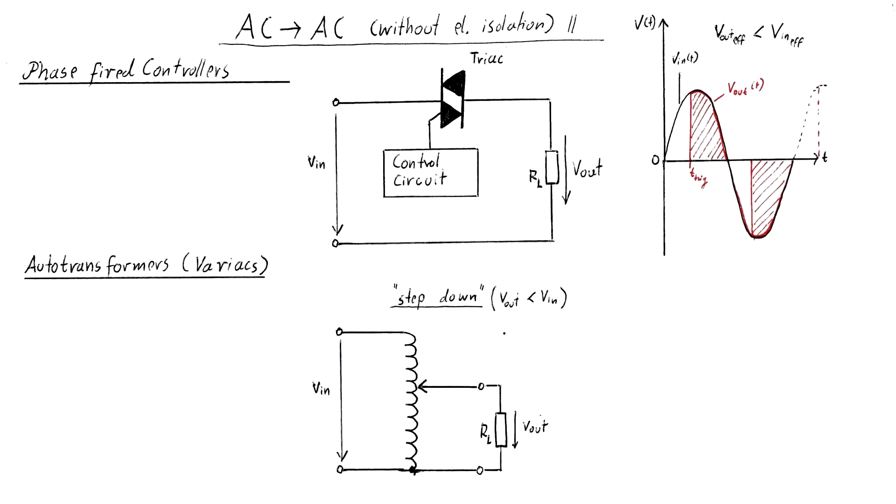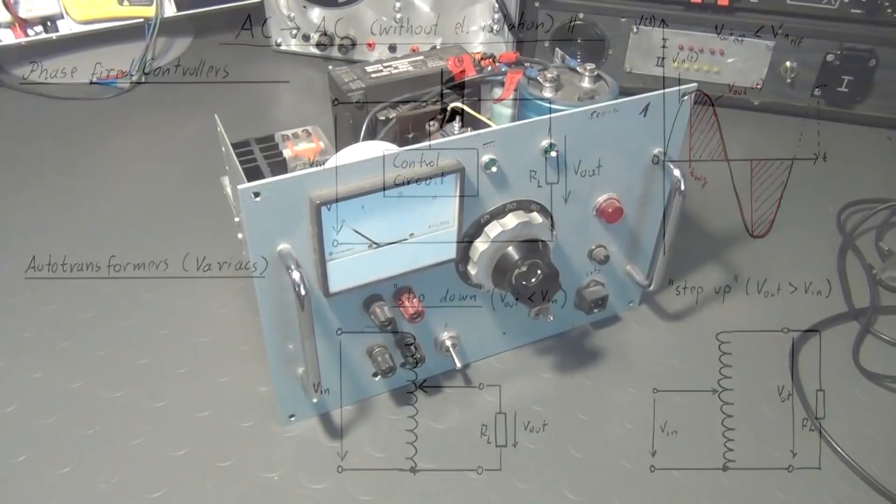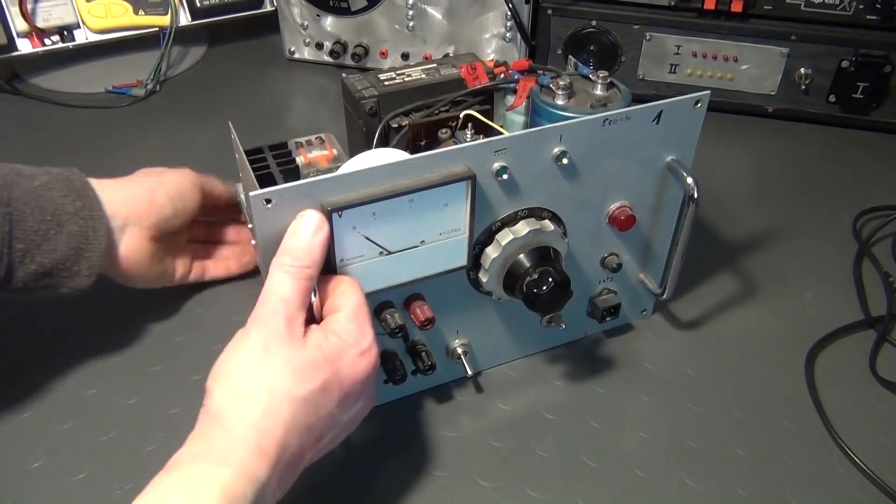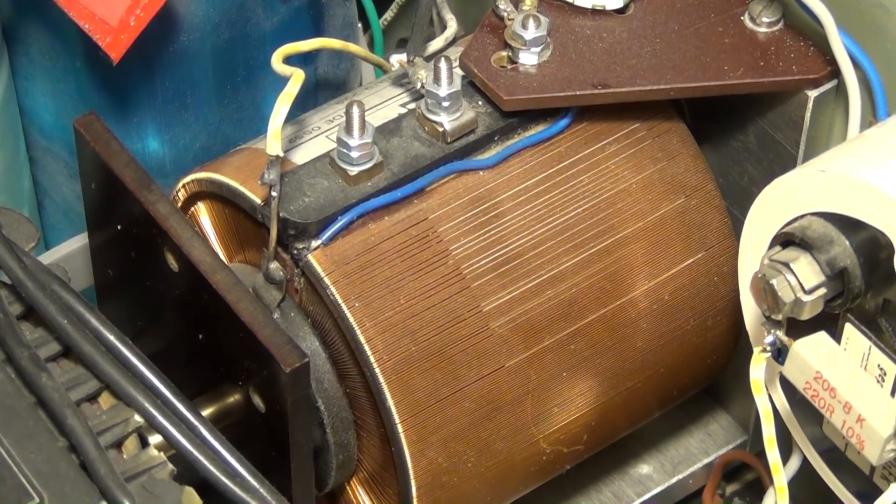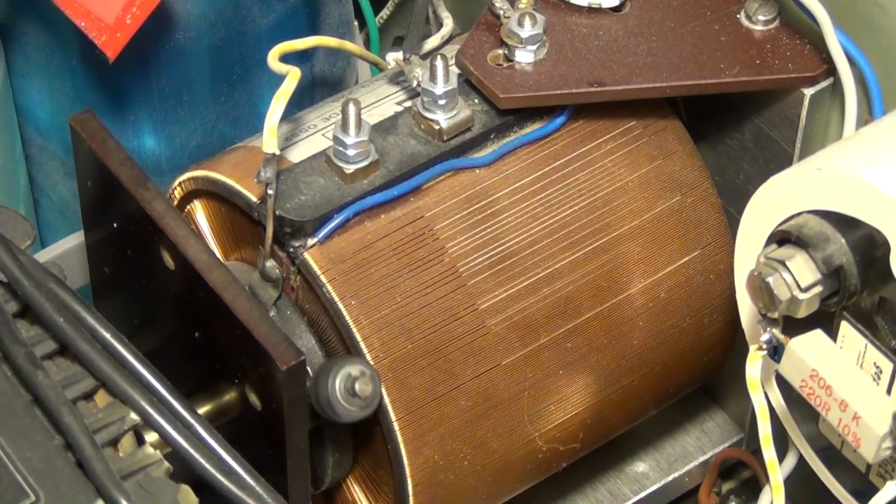Another possibility to convert AC voltages are autotransformers. Autotransformers consist of a winding on a magnetic core like normal transformers but are special in that they only have one winding and therefore do not supply electrical isolation. Autotransformers can be used to step down voltages but can also be used to step them up. A common application of autotransformers are older lab power supplies like the one you see here. This device is a special kind of autotransformer called variac. It is simply a transformer with just one winding that has a movable tap with which the output voltage can be changed.